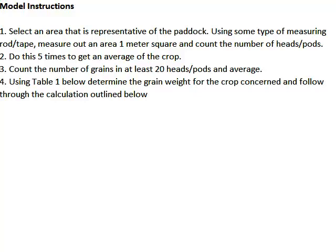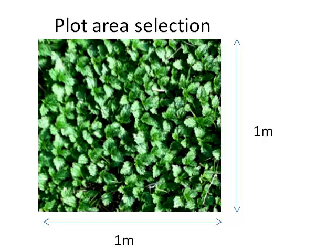In the first page of this Excel sheet, I have detailed the model instructions. Step 1: select an area that is representative of the paddock. Using a measuring rod or tape measure, measure out an area of 1 metre squared and count the number of heads or pods of this crop. It is important to stick to the measurements, otherwise bias will be introduced into the model. It is also important that you select an area that is representative.